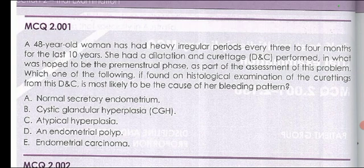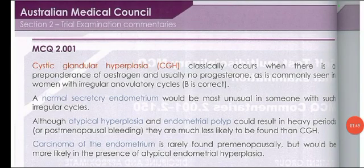The options are: A — normal secretory endometrium, B — cystic glandular hyperplasia, C — atypical hyperplasia, D — endometrial polyp, E — endometrial carcinoma. The correct answer is cystic glandular hyperplasia. This classically occurs when there is a preponderance of estrogen and usually no progesterone, as commonly seen in women with irregular anovulatory cycles.